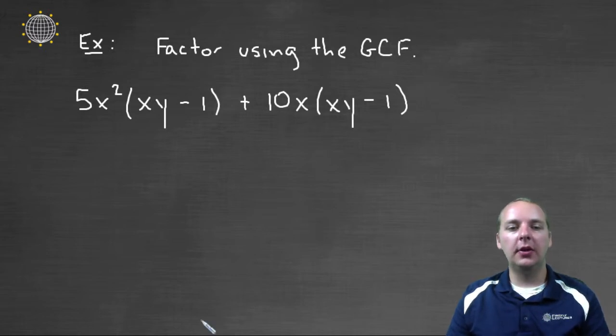So again if we're looking for a common factor, let me look at the coefficients first. The 5 and the 10. 5 would be the GCF between 5 and 10.